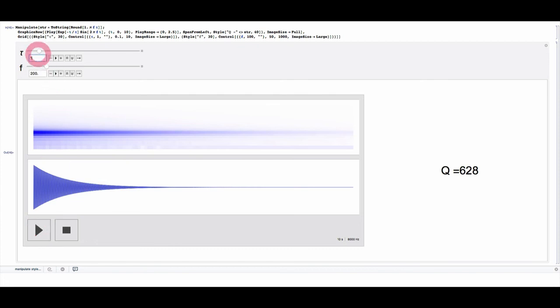For a fast decay, so 0.1 of a second, it's a quality factor of about 60.